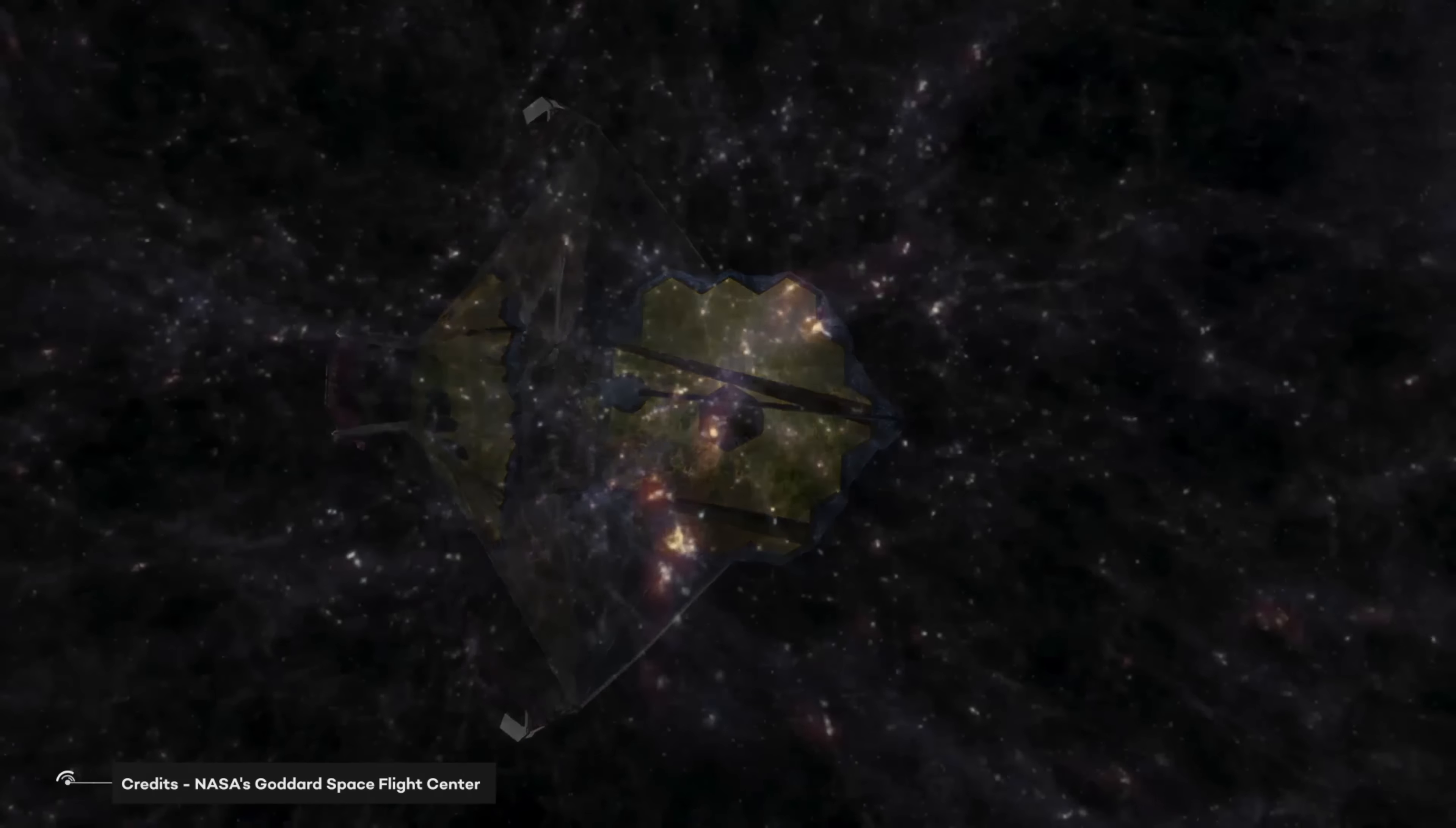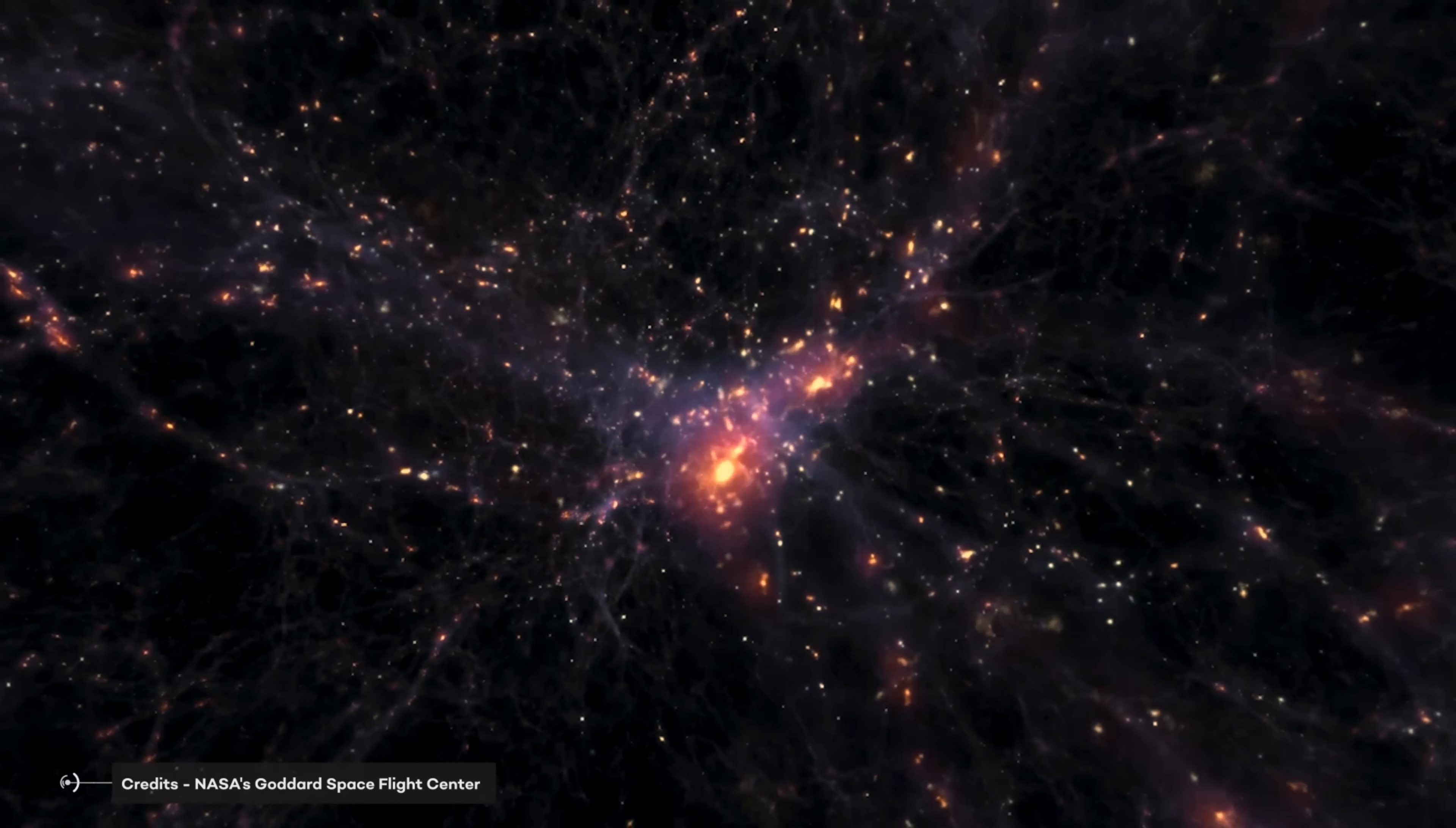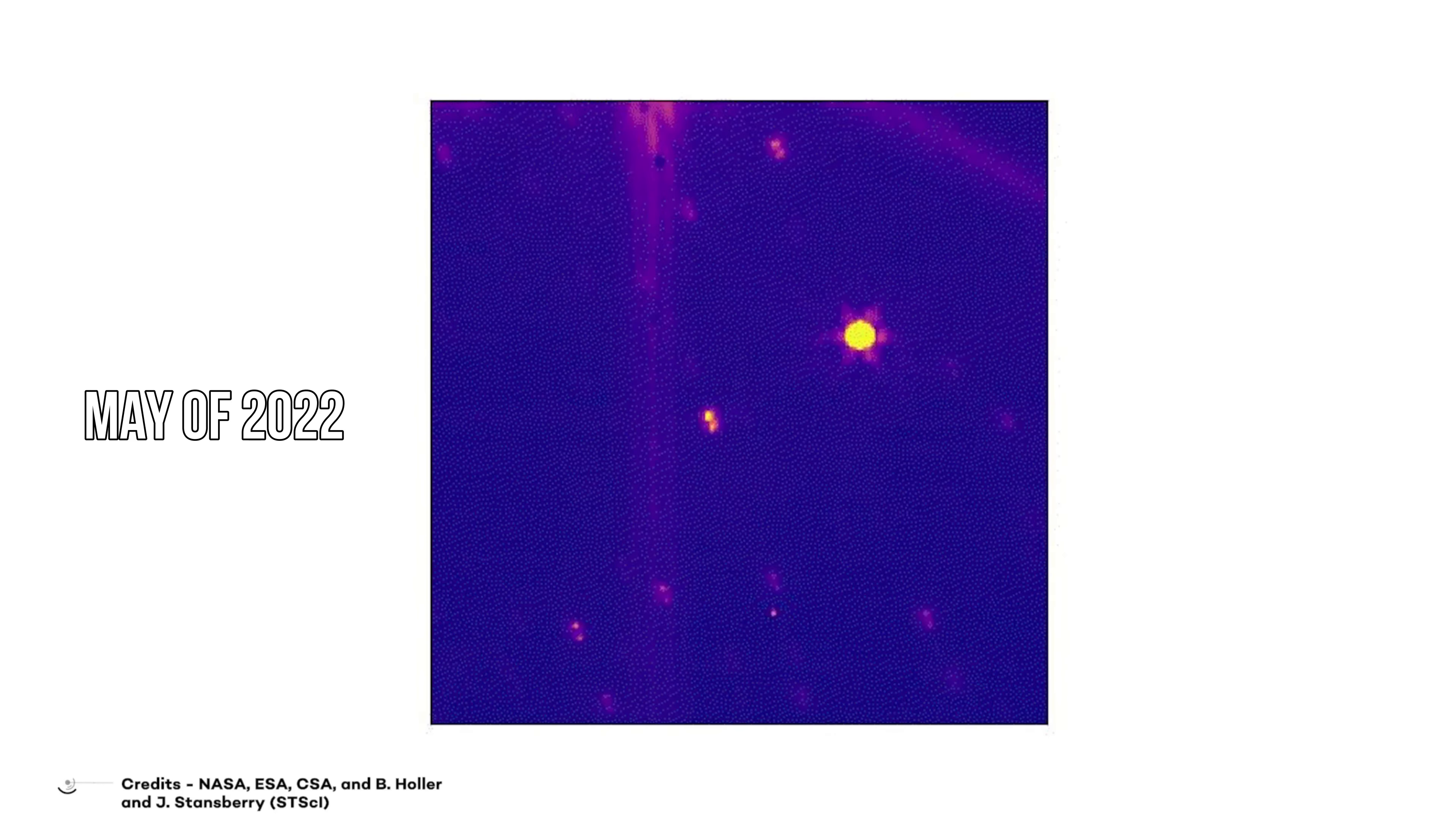NASA's James Webb Telescope is made to observe and reveal the deepest secrets of our universe, but it can also track and image objects in our solar system. Earlier, in May of 2022, NASA's Next Generation Space Observatory successfully saw a moving asteroid.